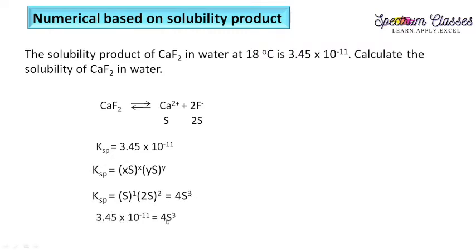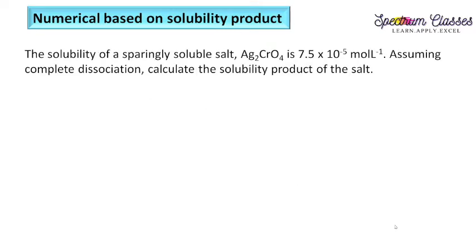So Ksp = s × (2s)² = s × 4s² = 4s³. Putting the value of Ksp and solving this equation, we get the solubility of CaF₂ as 2.05 × 10⁻⁴ mol/L.